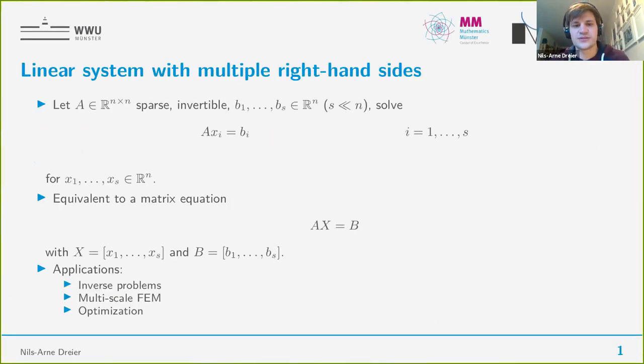I want to start with a short explanation of the problem we are looking at. We have an operator A, you can think of an N cross N matrix which is sparse and invertible, and we have multiple right-hand sides. So B1 to Bs are vectors, and the S, the number of right-hand sides, is much smaller than the dimension of the operator N. You can think, for example, S is kind of hundred and N is in the order of millions or so. And for all those right-hand sides, we want to solve the linear system Ax equals to B.